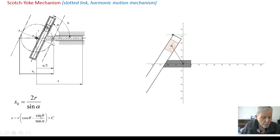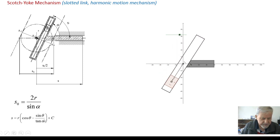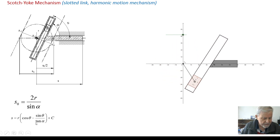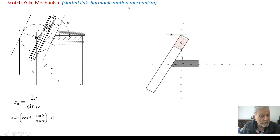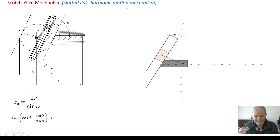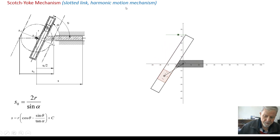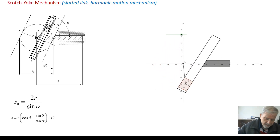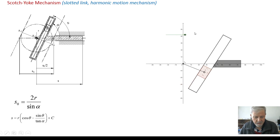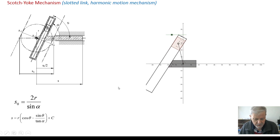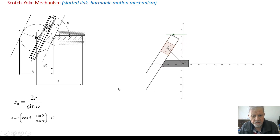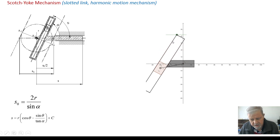Notice that if tangent alpha equals pi — that is, alpha equals pi over 2 — this term cancels, giving S equals R cosine theta plus C. That is why it is called the harmonic motion mechanism: the displacement follows exactly a cosine curve. Whether measured one way or the other, it is a cosine curve. That is why it is called harmonic motion.